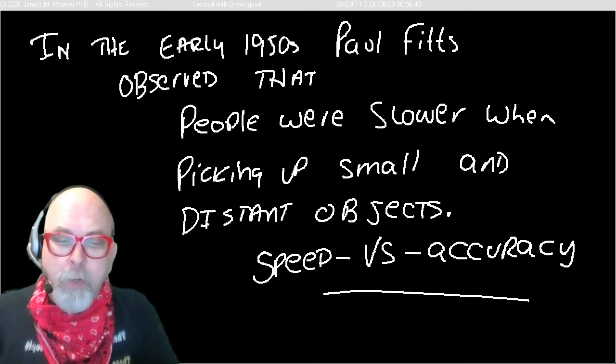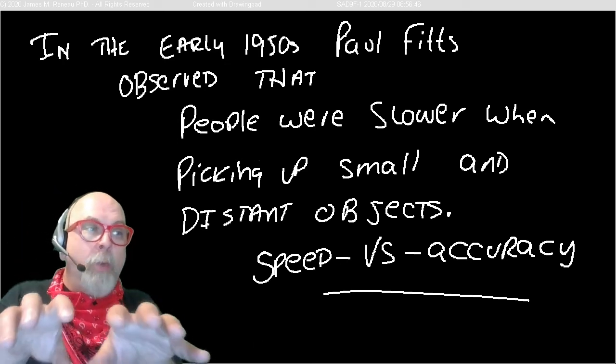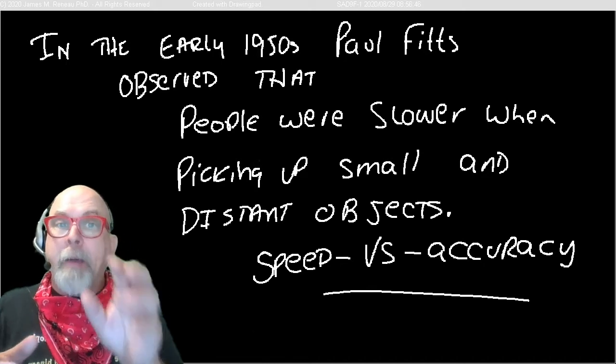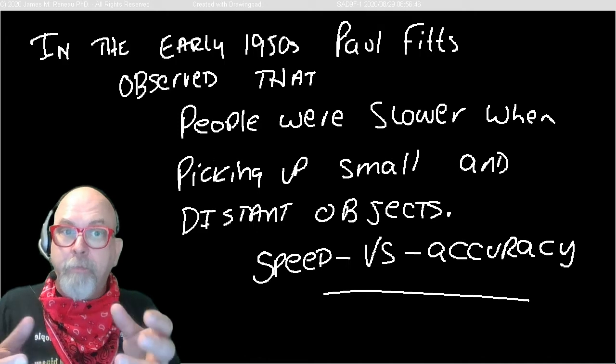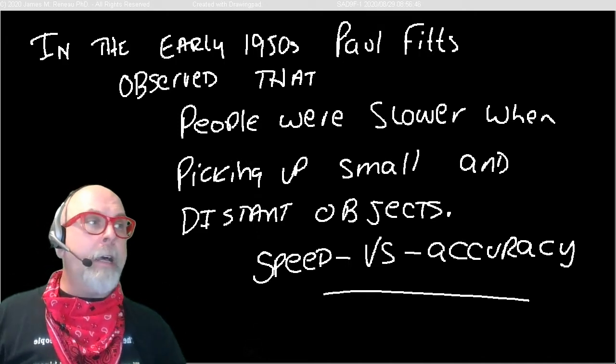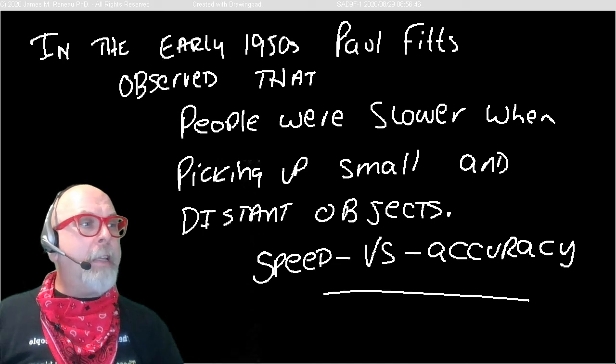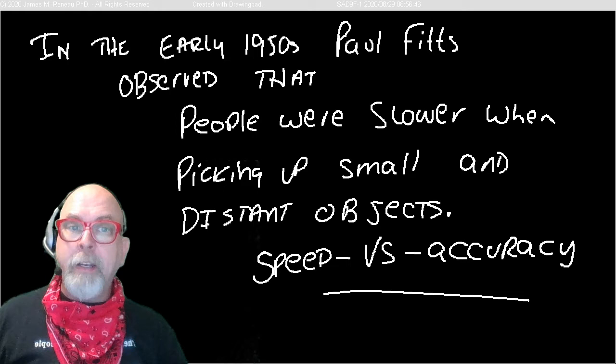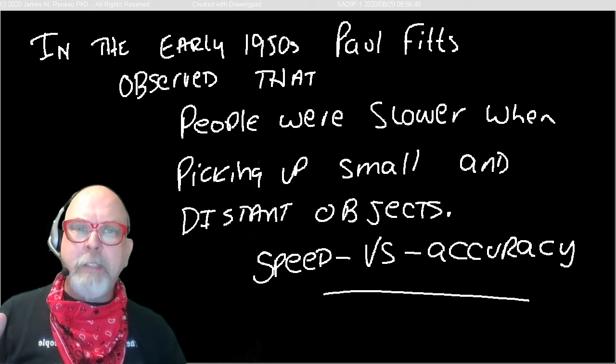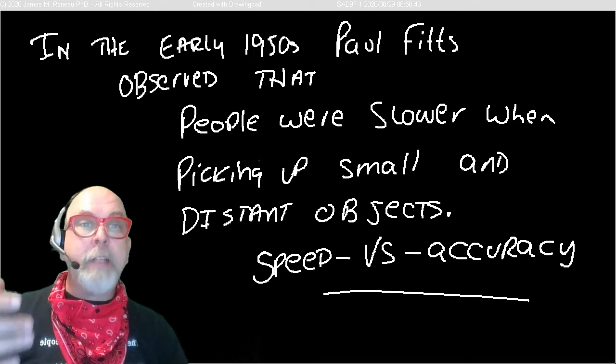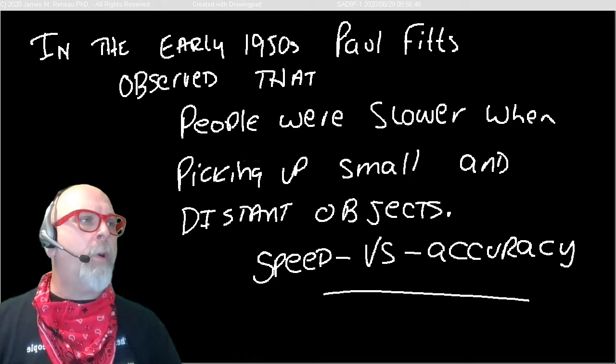So if you have two objects that are the same distance away from you, and one is large and one is small, it's going to be quicker to pick up the large object than the small object at the same distance. So he basically said that there's a direct correlation here between speed and accuracy. Because think about a distant object, you've got to be more accurate. And think about a smaller object, you have to be more accurate.